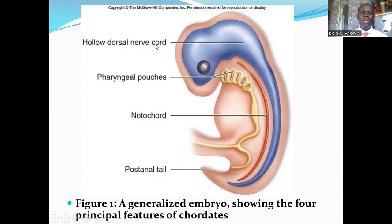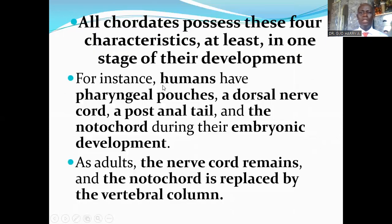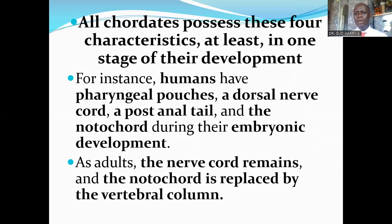A dorsal hollow nerve cord, pharyngeal pouches, a notochord, and a post-anal tail — all chordates possess these four characteristics at least in one stage of their development. For instance, humans have pharyngeal pouches, a dorsal nerve cord, a post-anal tail, and a notochord during their embryonic development. As adults, the nerve cord remains and the notochord is replaced by the vertebral column.